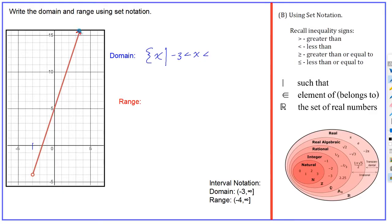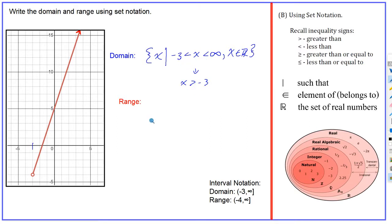The arrow tells us the graph keeps going in the upward-right direction forever, so the x-values keep going to positive infinity. Since we can't actually reach infinity, we use the less than sign — so minus three is less than x, less than positive infinity — and then x is an element of the real number system. There's also a simpler way to write this: instead of the two-part inequality, you can just say x is greater than minus three, which says the exact same thing.